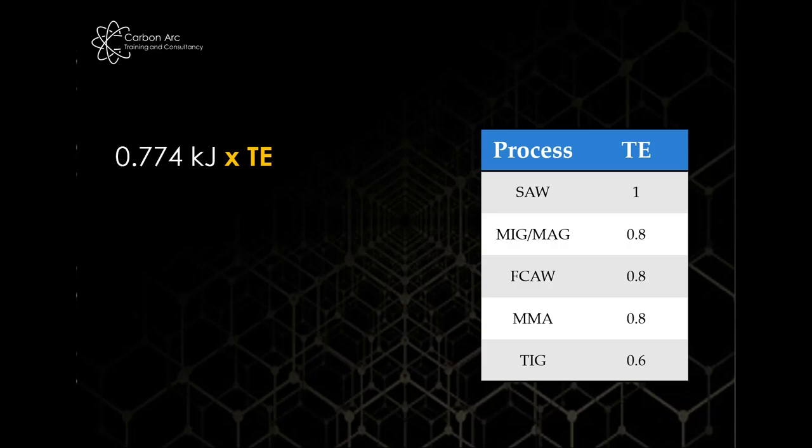So taking our equation here, 0.774 kilojoules times our thermal efficiency, we can look at those and say different welding processes have different efficiencies. So submerged arc is 1 and TIG is 0.6. So they're dropping down here. Now this is a measure of how much heat actually makes it across the arc into the weld pool. So submerged arc is a covered process where the arc is not open to the atmosphere. So all of that heat is forced down, or we assume all of the heat is forced down into the weld pool. And then different processes have different efficiencies of that. So you can see the numbers dropping down, with TIG in the arc welding processes being one of the worst performance for efficiency.